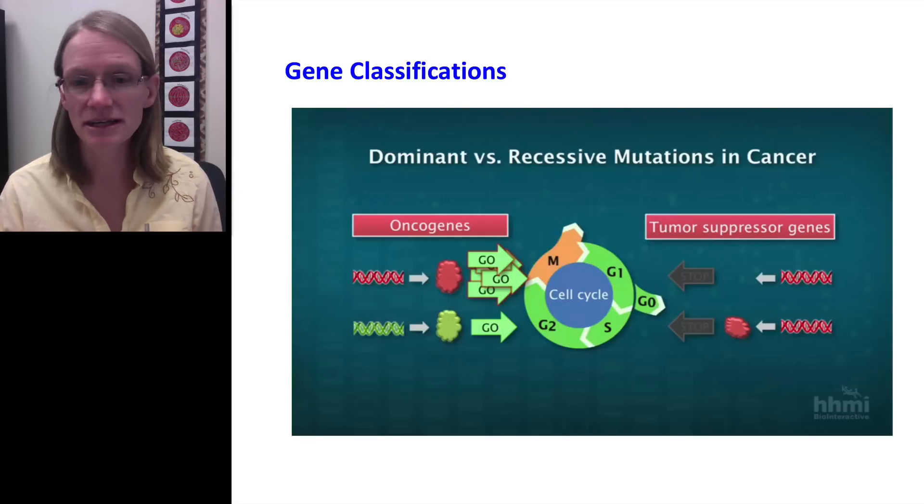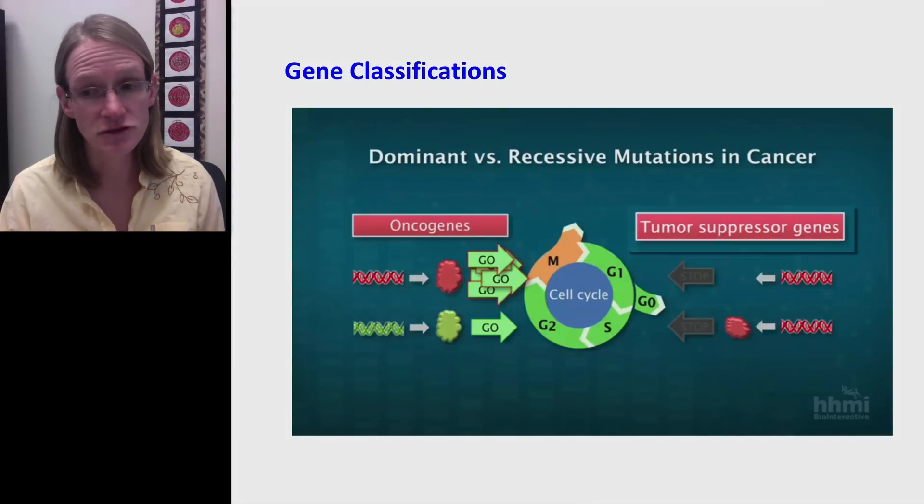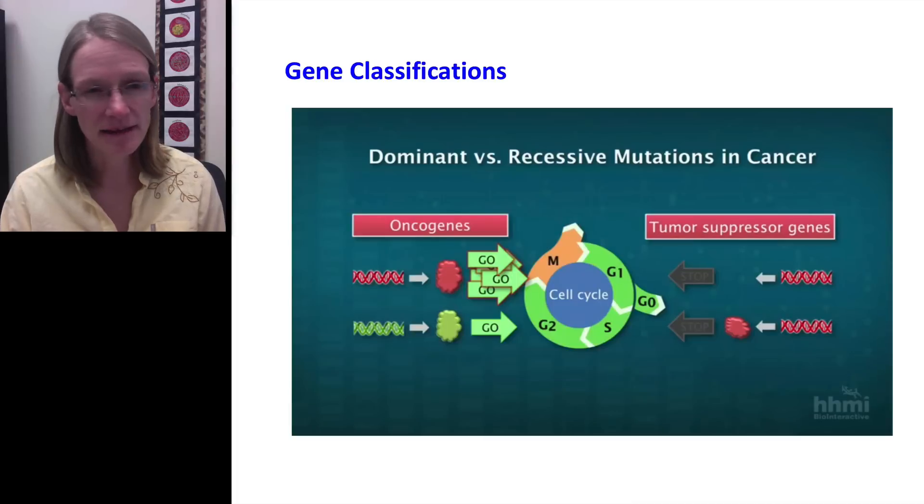So first he talked about these gene classifications. We talked a little bit about how there's these oncogenes and there's these tumor suppressor genes. And we think about this in terms of dominant recessive mutations because, of course, we know that these cancerous changes are because of these mutations.